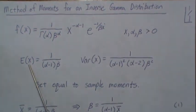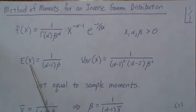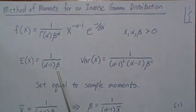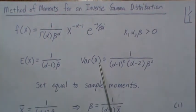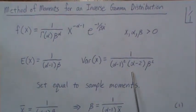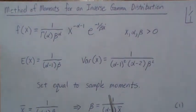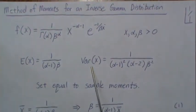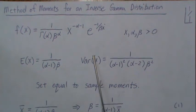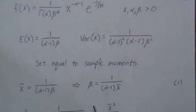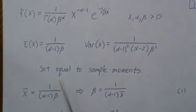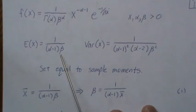In the video we derived the mean and variance of an inverse gamma distribution. We found that the mean is 1 over (α-1) times β, and the variance is given by the formula shown. For the method of moments estimators, we set these population parameters to the sample moments. We set the mean equal to the sample mean, the variance to the sample variance, and then back solve for α and β.